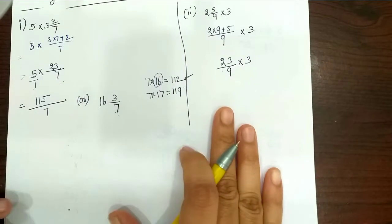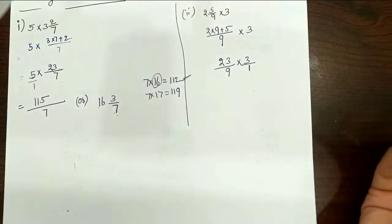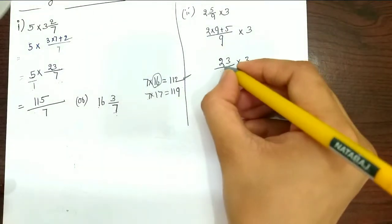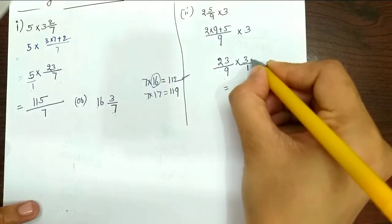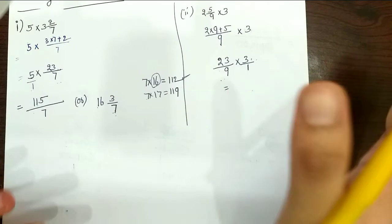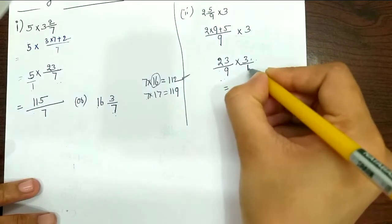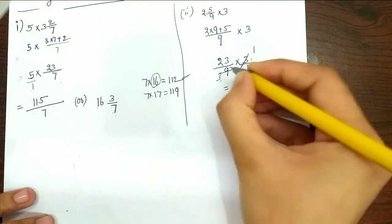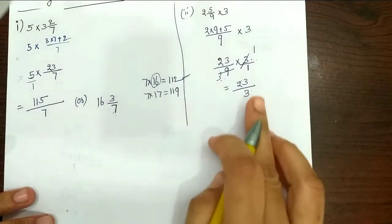Into 3 — this is the same. Here the number 3 is single, so it is the denominator. Fraction multiplication: numerator times numerator, multiply in the denominator. So 23 times 3 in the numerator. Here in the denominator, 9 and 3 — we can cancel. After canceling: 23 once is 23, 3 once is 3. That means the total is 23 by 3.